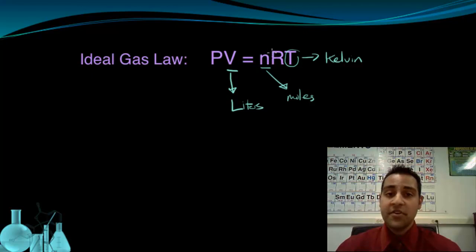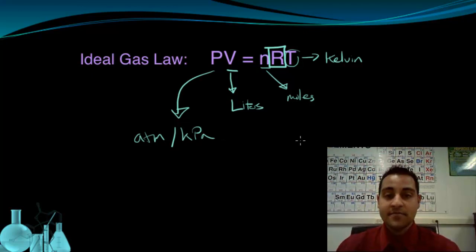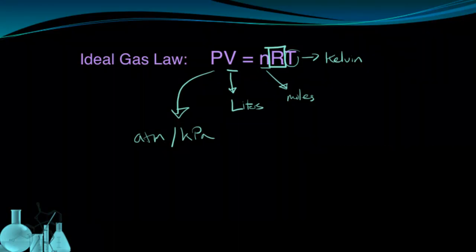So we're about to figure out what this R gas constant is, but we haven't defined what unit pressure is in. If we want to find out what R is going to be, then we have to decide if pressure is measured in atmospheres or in kilopascals. Let's see how we can come up with this R, the universal gas constant.